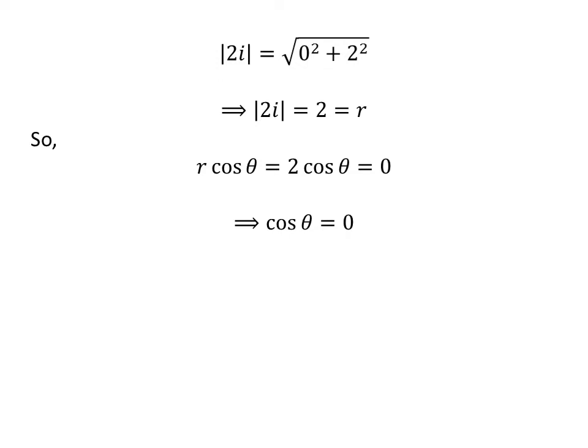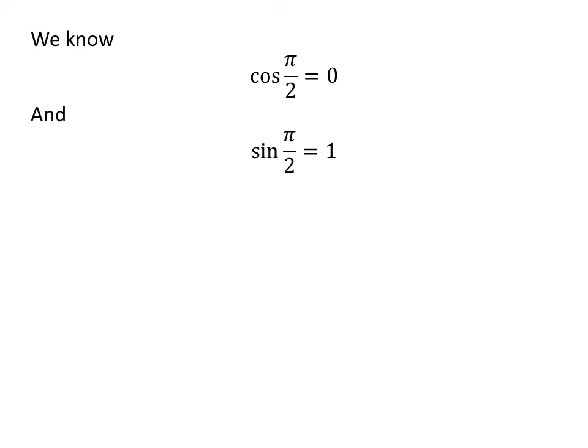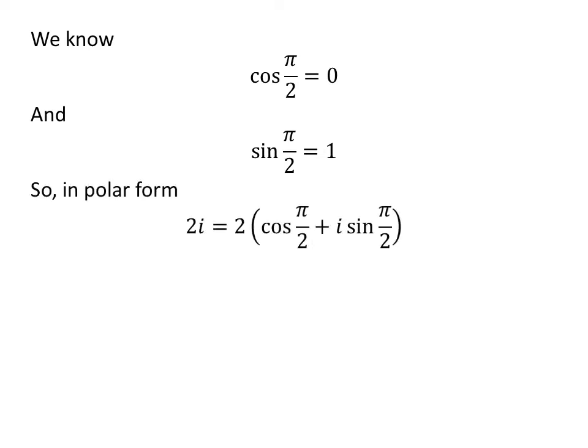As we know, R times cosine of theta is equal to 0, so cosine of theta is equal to 0. Similarly, sine of theta is equal to 1. We know cosine of half of pi is 0 and sine of half of pi is 1. So the polar form of the complex number 2 times iota is 2 times cosine of half of pi plus iota times sine of half of pi.